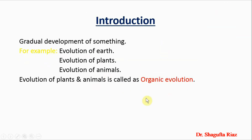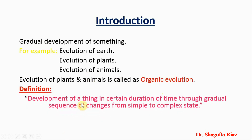The concept that organisms living today — either plants or animals — have changed from those that lived in the past. Living things can change; this phenomenon is called organic evolution. There is another definition: the development of a thing over a certain duration of time through a gradual sequence of changes from a simple to a complex state.